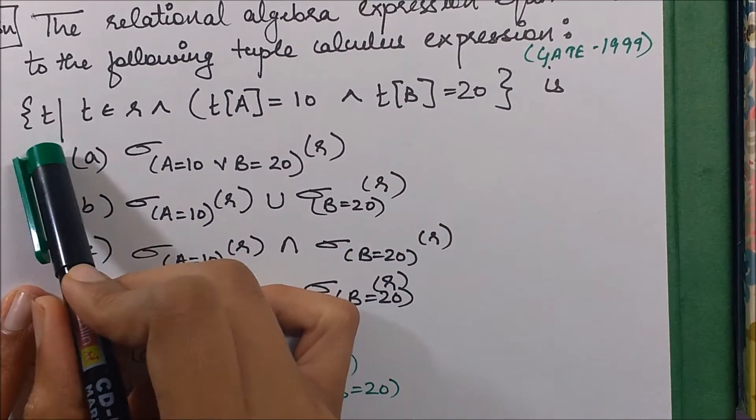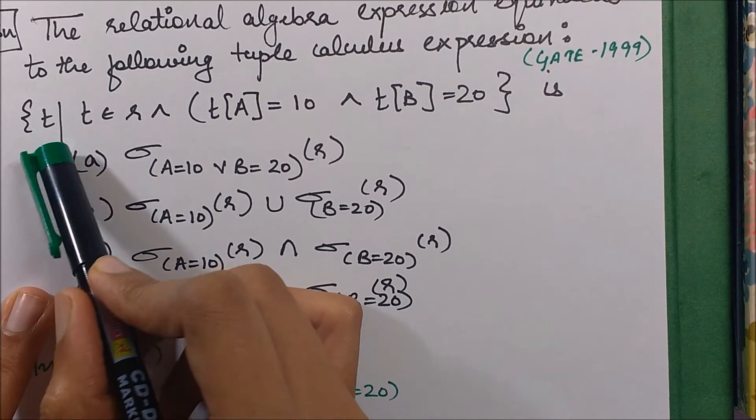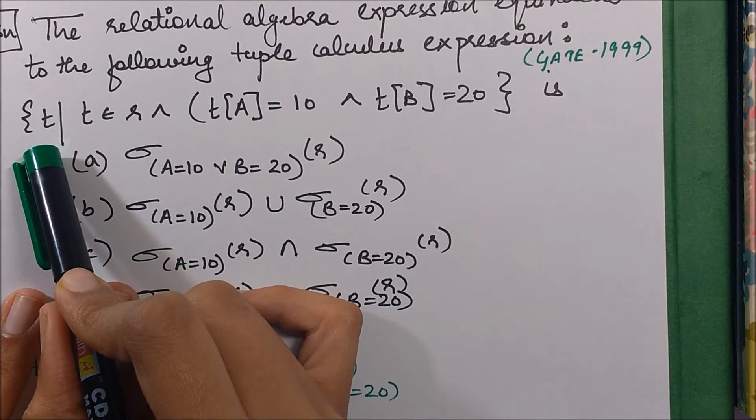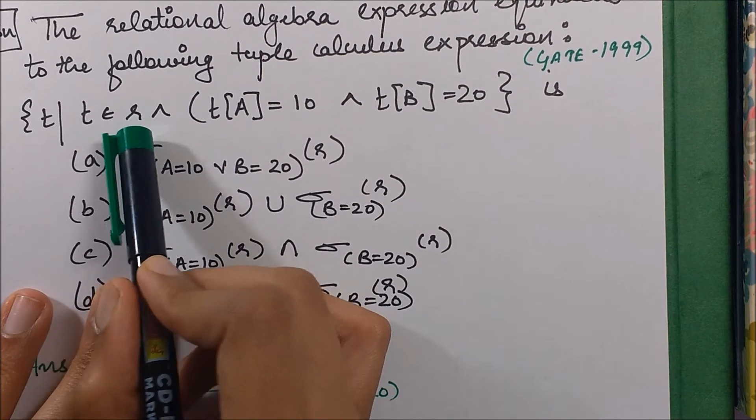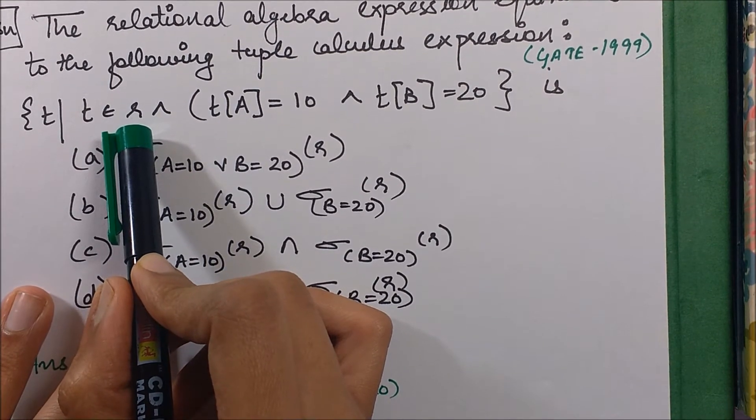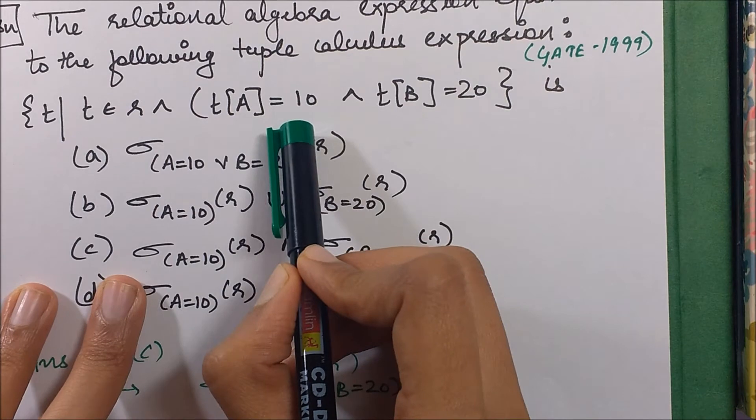The expression is given as this: t is a tuple, select those tuples, select those rows of the table which belong to relation r. Then t of a equals 10.